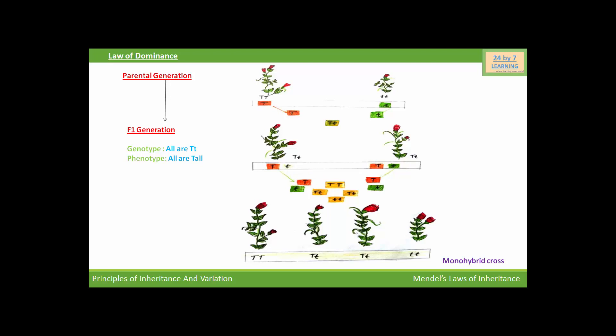Here we can see the law of dominance. In F2 generation of this monohybrid cross, genotypic ratio was 1:2:1 and phenotypic ratio of tall and dwarf plants was 3:1.